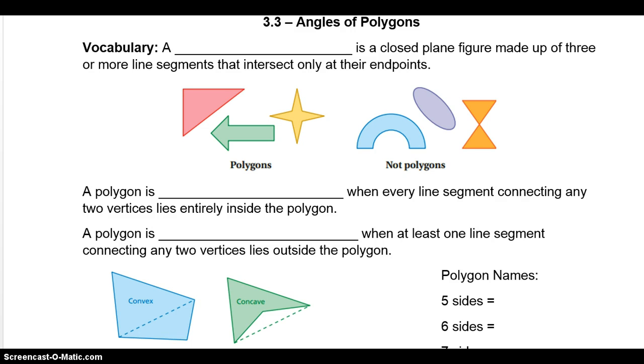Okay, today we're going to talk about angles of polygons, section 3.3. A polygon is a closed plane figure made up of three or more line segments that intersect only at their endpoints. So it's closed, not open, and it has to have three or more line segments. You can see here are different types of polygons, and then over here are not polygons.